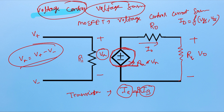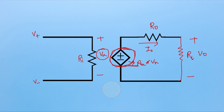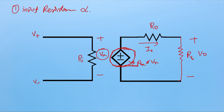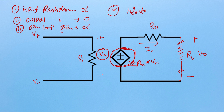Now we will see the ideal op amp properties. First: the input resistance of the op amp should be infinite. Second: the output resistance of the op amp should be zero. Third: since this is a voltage amplifier, the open-loop gain should be infinite. Open-loop gain means when we don't have any feedback or load resistance — that open-loop gain should be infinite.